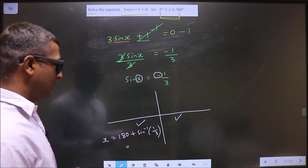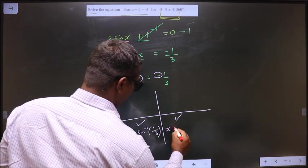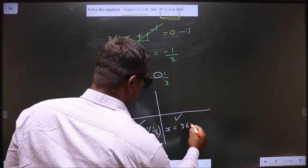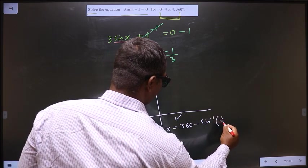Okay, next. Now to get an angle in the fourth quadrant, we should do 360 minus sin inverse 1 by 3.